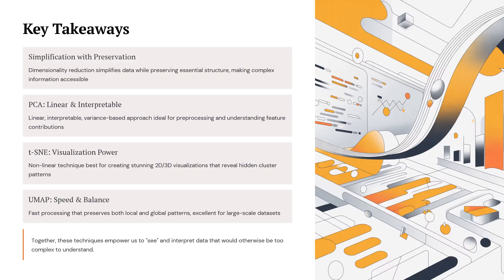Here are the key takeaways. Dimensionality reduction helps simplify data while still keeping the important structure. PCA is linear, fast, and easy to interpret — great for pre-processing and understanding feature contributions. t-SNE is powerful for visualization, revealing hidden clusters in complex data. UMAP offers both speed and structure preservation, making it ideal for large datasets. Together, these methods help us see and understand patterns in data that would otherwise be too complex to interpret.